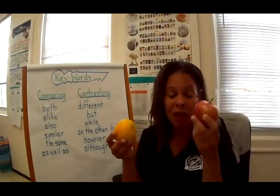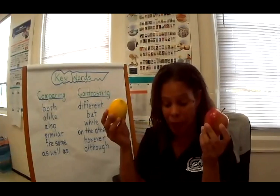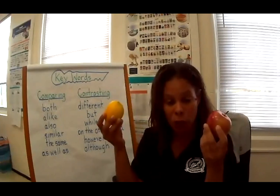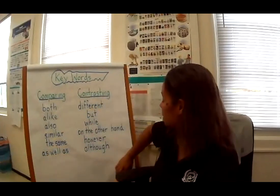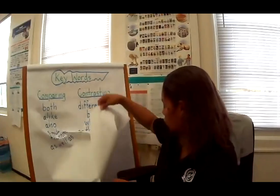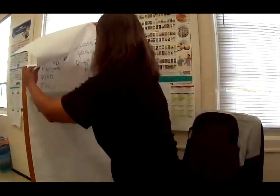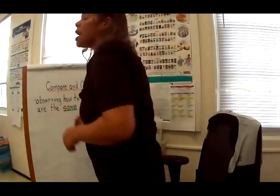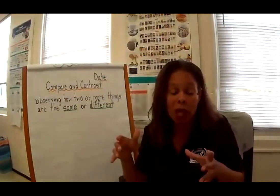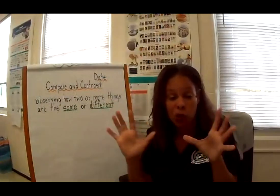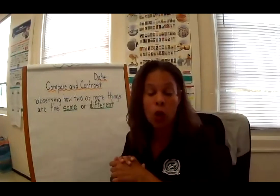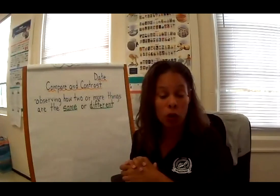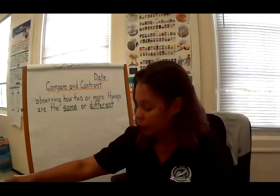Now that we have compared and contrasted our two topics, what do we do with this information? We can put it on something called a Venn diagram. A Venn diagram is simply an organizer that helps us to organize, remember, and sort out our important bits of information. I'm going to show you how to create your own Venn diagram.